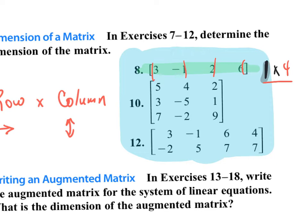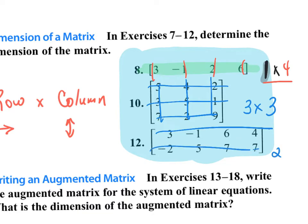It's important that you understand how to name the dimensions of a matrix. If I look at number 10, it's three rows by three columns — so it's a three by three. And number 12 is two rows by four columns — so it's a two by four.